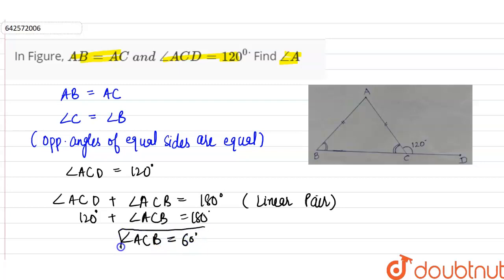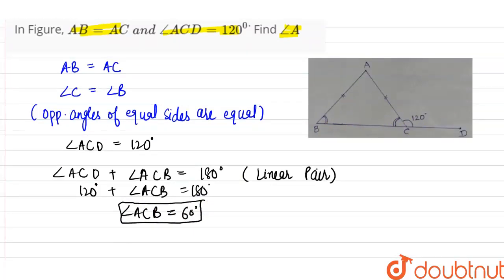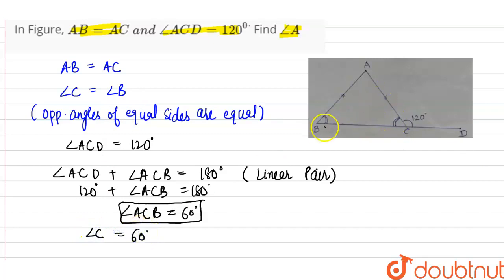So angle ACB, which is angle C, is equal to 60 degrees. Since angle C equals 60 degrees, and we established that angle B equals angle C, angle B is also equal to 60 degrees. Both angles B and C are equal to 60 degrees.